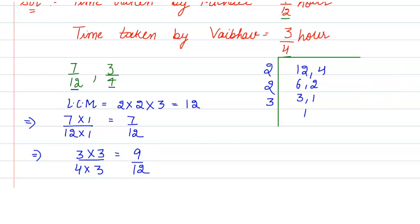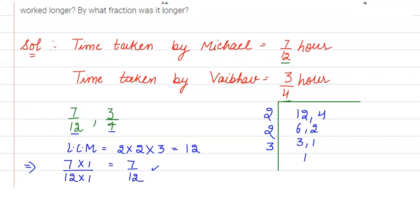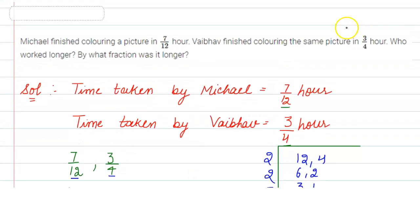Now, 12 divided by 4 is 3. That means 3 into 3, 4 into 3, so we get 9/12. Now you can easily compare these two quantities, which is 7/12 and 9/12. We can see that 9/12 is greater than 7/12. 9/12 is the time taken by Vaibhav. Therefore, Vaibhav has worked longer.